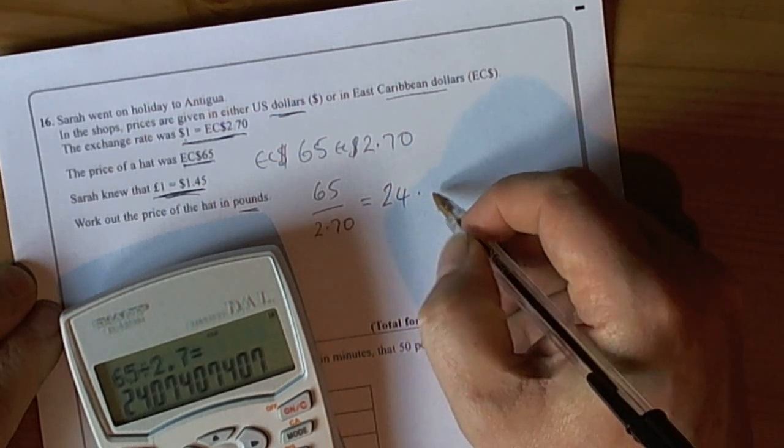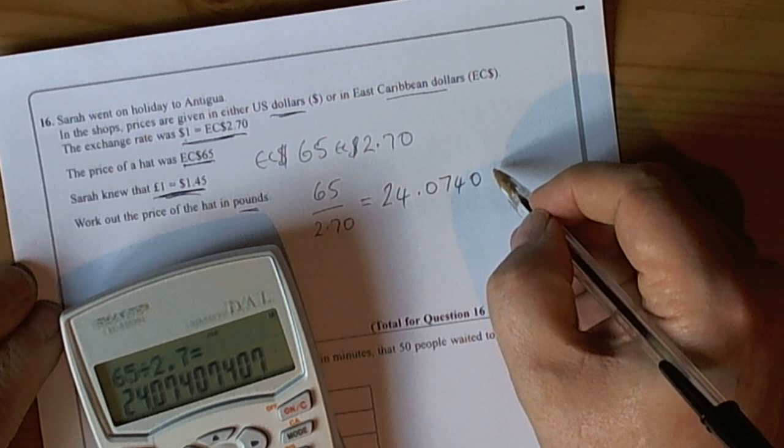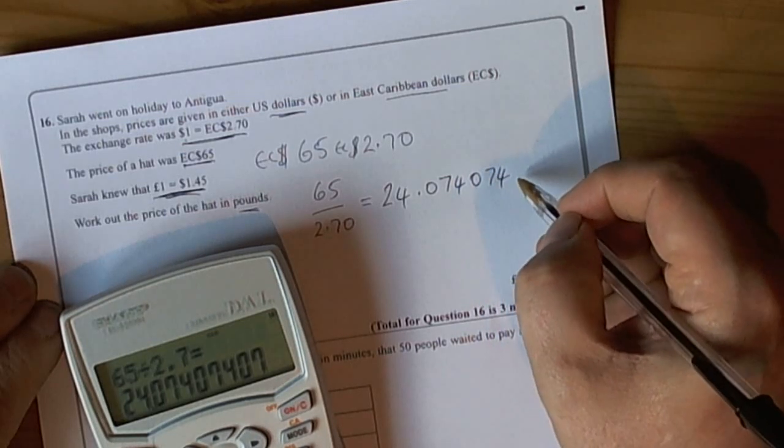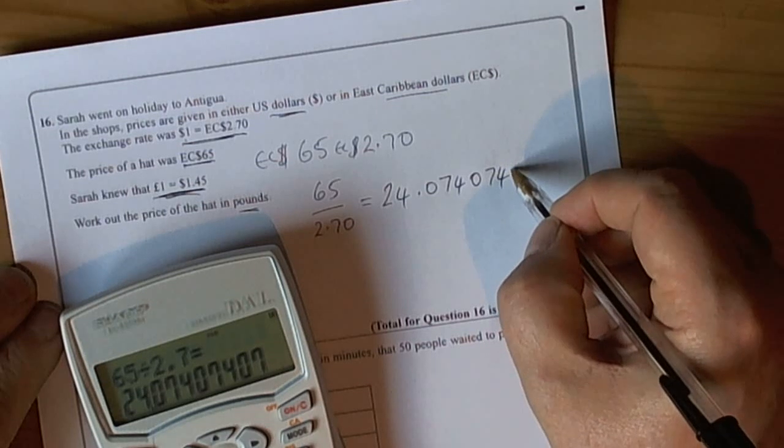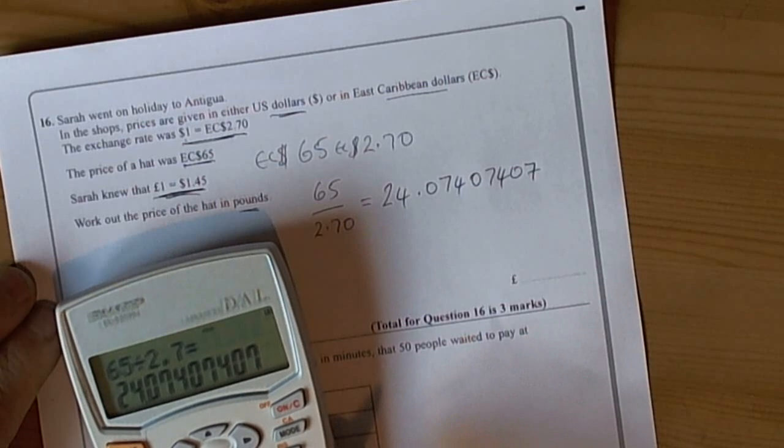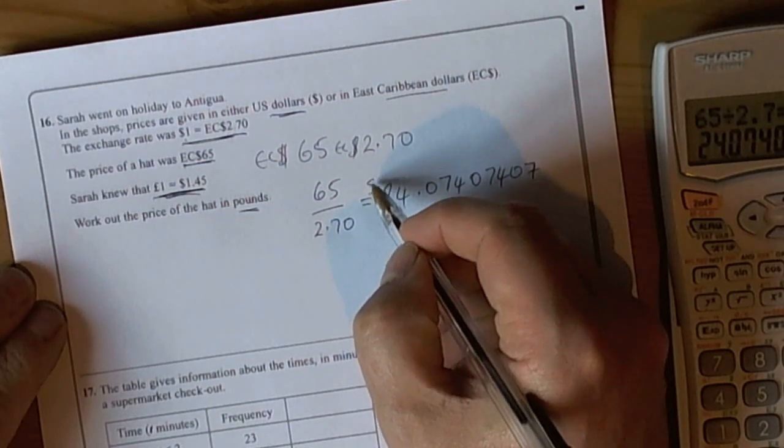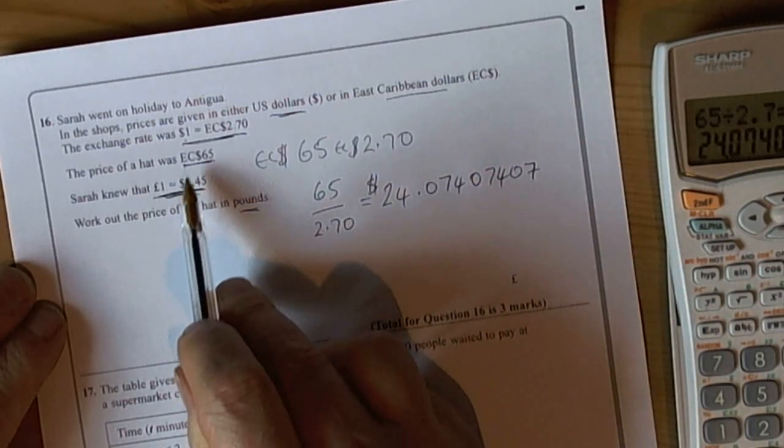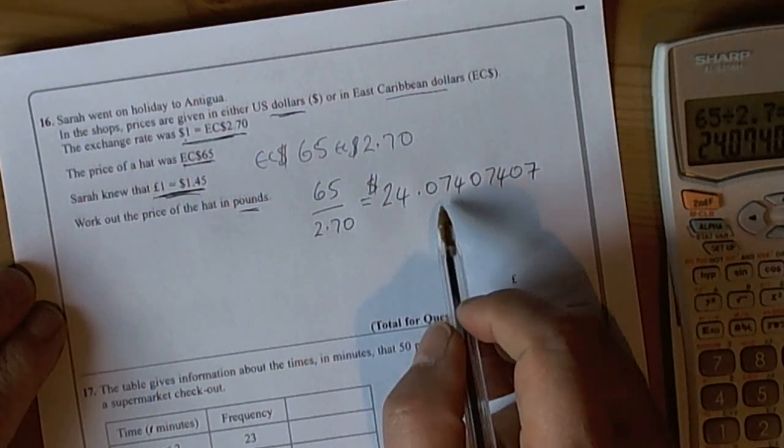Watch with calculator questions - you really should use the whole number on the calculator throughout your workings out until you get to the final answer. That's the only time that you should round, otherwise you get the potential for losing an accuracy mark. So we know that in US dollars, the 65 dollar hat is 24 point and so forth.